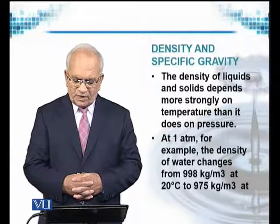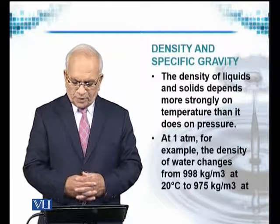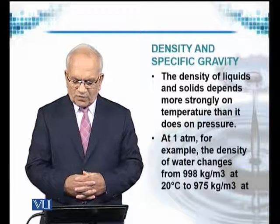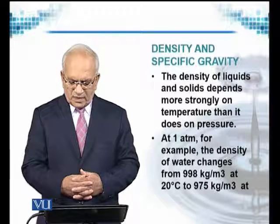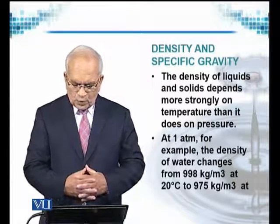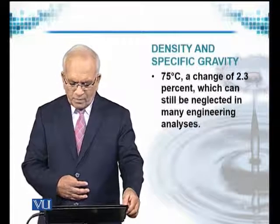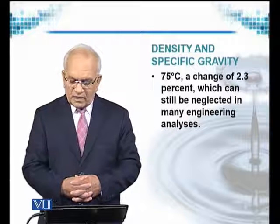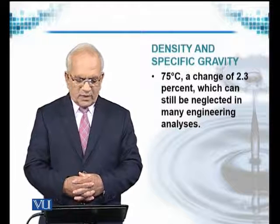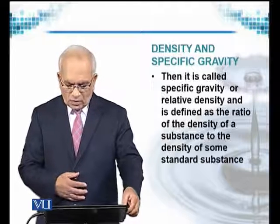The density of liquids and solids depends more strongly on temperature than on pressure. At 1 atmospheric pressure, the density of water changes from 998 kg/m³ at 20 degrees centigrade to 975 kg/m³ at 75 degrees — a change of about 2.3%, which can still be neglected in many engineering analyses.